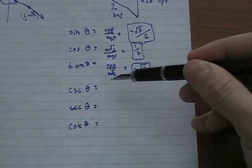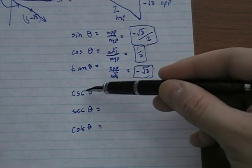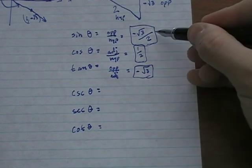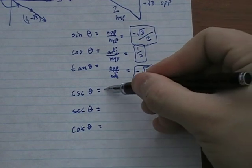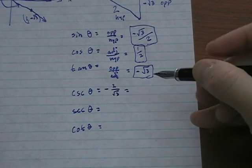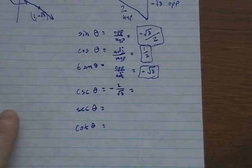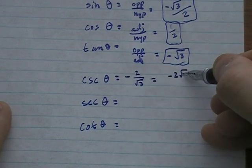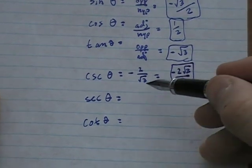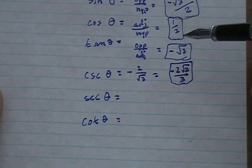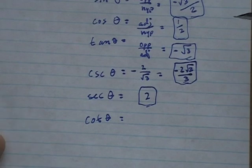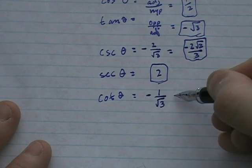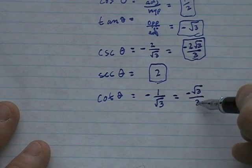The other three functions use reciprocal identities — cosecant, secant, and cotangent are just the reciprocals of sine, cosine, and tangent. So cosecant is -2/√3, which rationalizes to -2√3/3. Secant is the reciprocal of 1/2, which is just 2. And cotangent is the reciprocal of -√3, which is -1/√3, rationalizing to -√3/3.